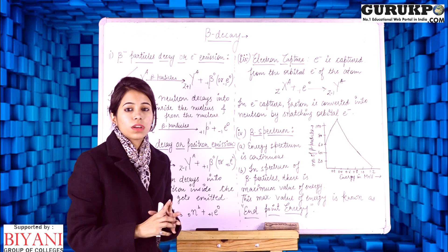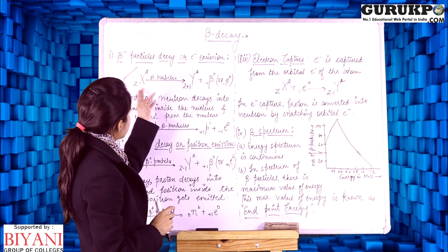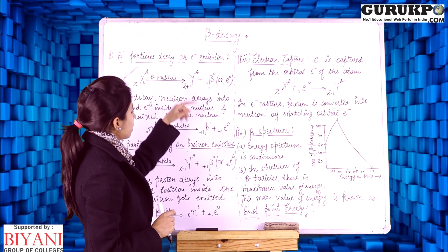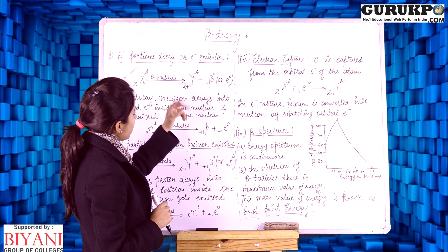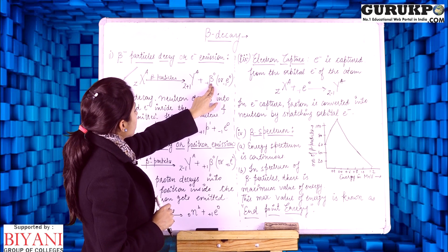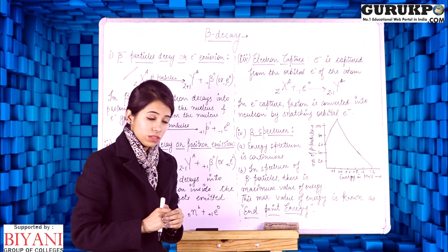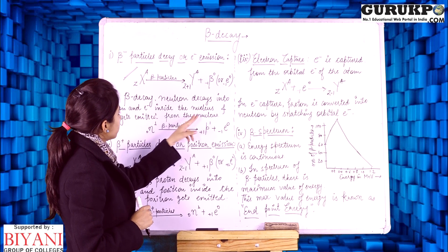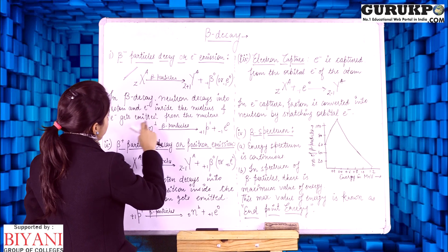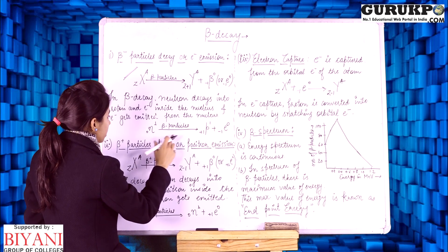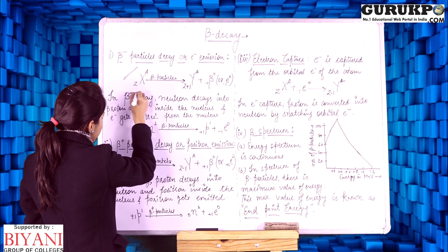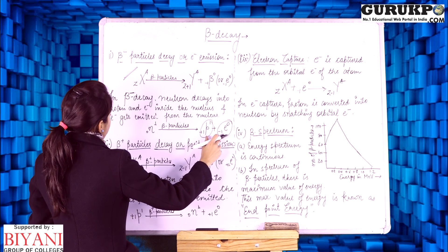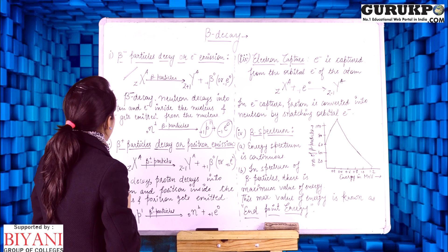Why isobars? Because isobars are those elements which have the same mass number but different atomic number. So in beta minus particle decay the two elements will be isobars, and the electron — the beta minus particle — is emitted from the nucleus. In beta minus decay, the neutron decays into a proton and an electron inside the nucleus, and the electron gets emitted from the nucleus.